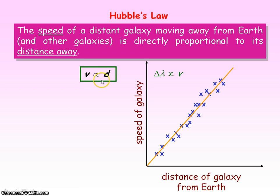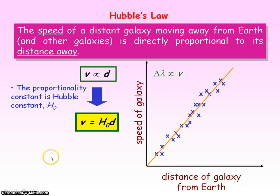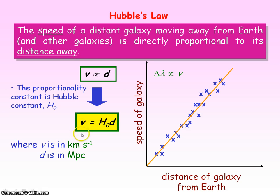Going back to this expression, to turn it into an equation we need to introduce a proportionality constant, which is Hubble's constant, H₀. For practical units, the speed of galaxies is measured in kilometres per second and the distance of galaxies from Earth in megaparsecs. Since Hubble's constant equals velocity divided by distance, its practical units are kilometres per second per megaparsec.